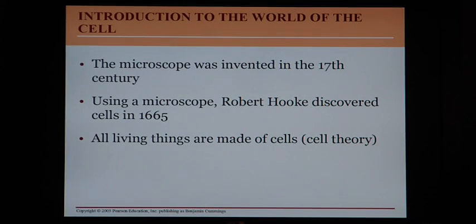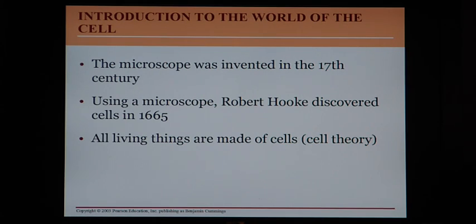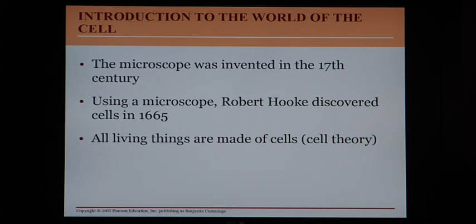In order to know anything about the cell, we had to be able to see it. The first time cells were actually viewed and we began figuring out how cells worked was in the 17th century, when the microscope was invented. Using a microscope, Robert Hooke discovered cells in 1665. For many years we didn't understand what the body was made up of, and it took two centuries to overcome past beliefs and accept that cells are the components of all living things — which is known as the cell theory.